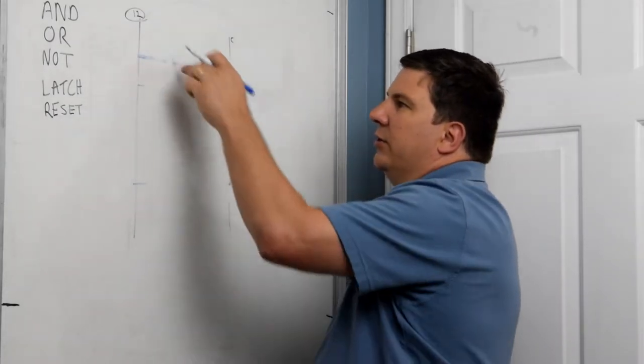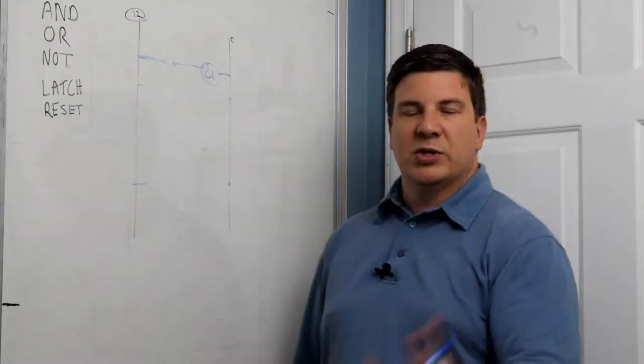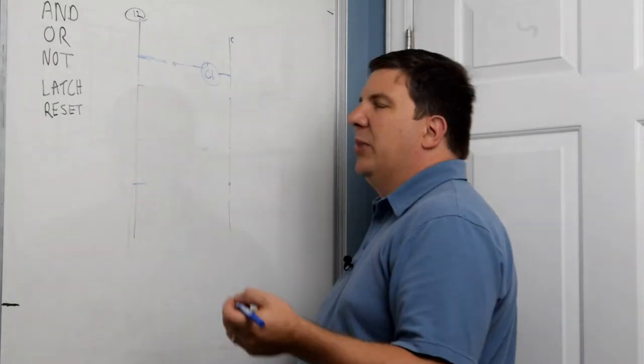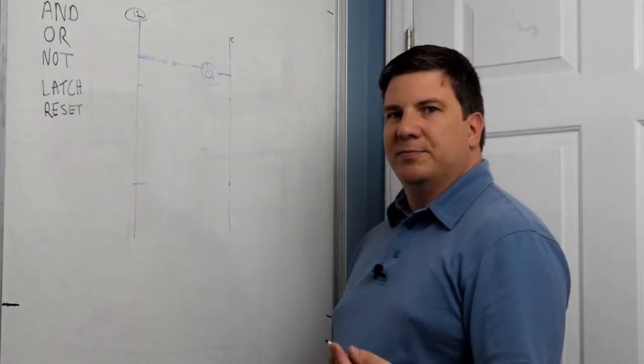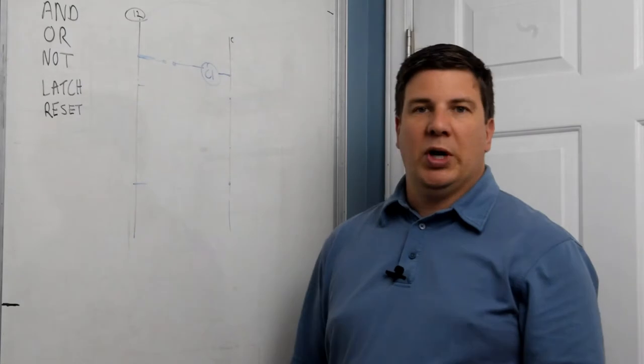So as long as I hold that button closed, C1's going to be on. The motor's going to be on and it's going to be doing whatever it does. But as soon as I pull that switch up, that switch will open and C1 will go off.